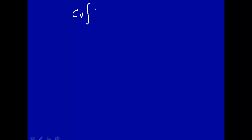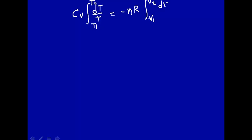So integral of dT over T from T1 to T2, and let's furthermore make the assumption that the number of moles is constant. So this is minus nR times the integral from V1 to V2 of dV over V.